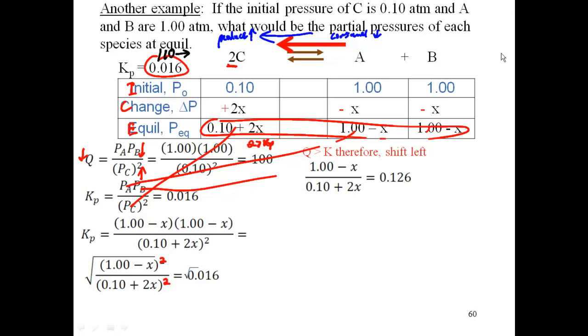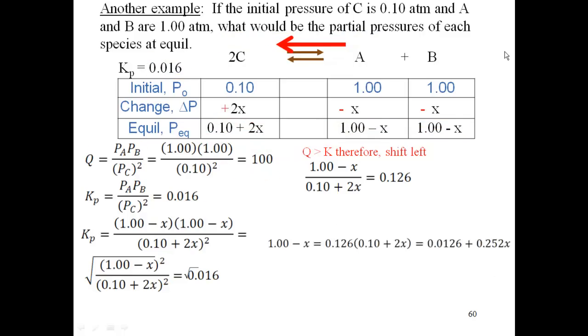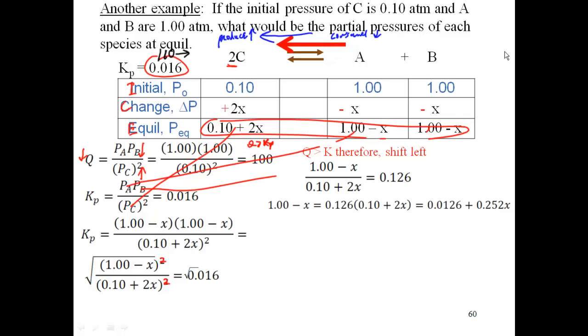So I'm going to take that 0.1 plus 2x and multiply that to both sides, so I can get rid of that in the denominator, which now gets me 1 minus x is equal to 0.126 times 0.1 plus 2x. Multiplying my 0.126 times 0.1 gets me 0.0126, and multiplying my 0.126 times my 2x gets me 0.252x.